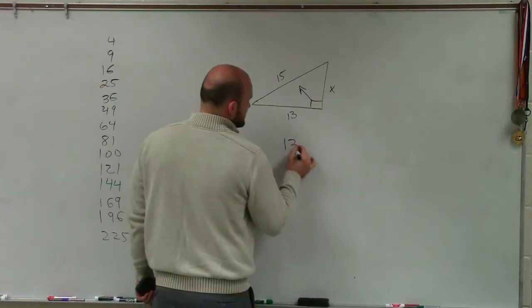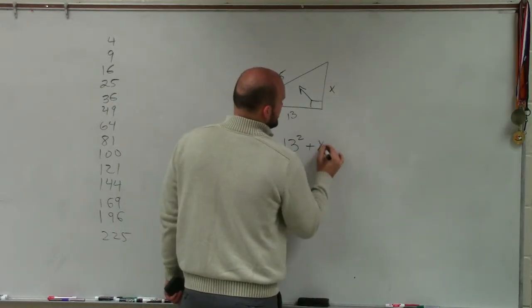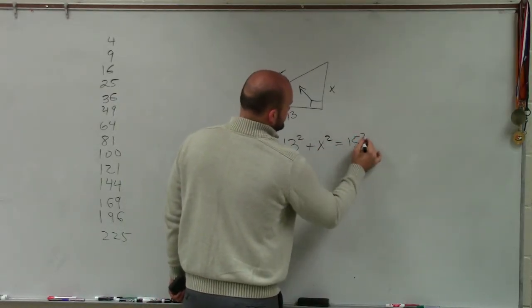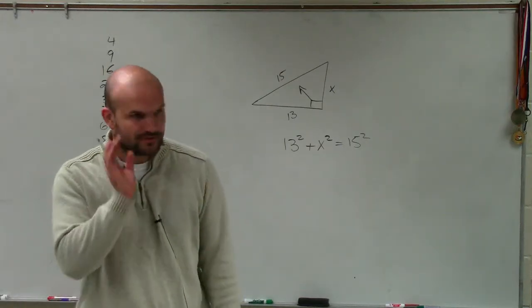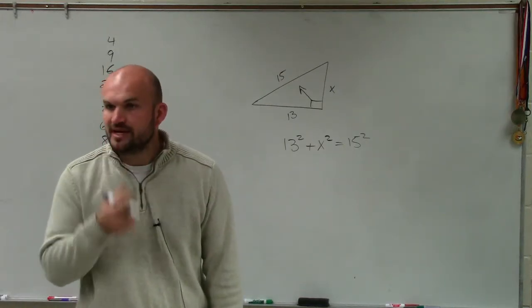So therefore, I can determine that this is 13 squared plus x squared equals 15 squared. Leg squared plus leg squared equals hypotenuse squared for your Pythagorean Theorem.